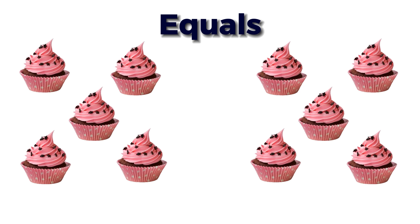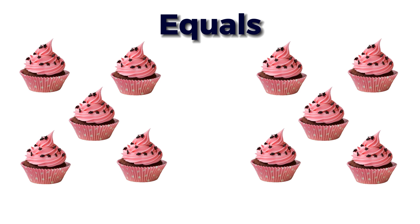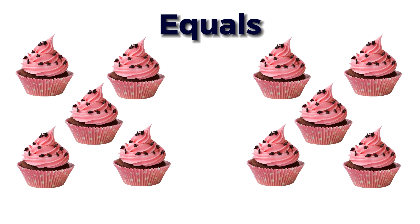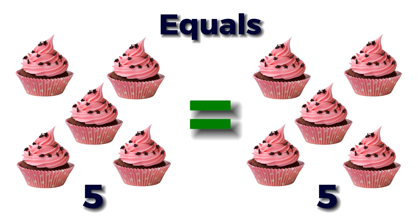Look at these cupcakes. There are five cakes on each side, so the number on one side is equal to the number on the other side. There are five on the left side and five on the right side. Both sides have the same number of cupcakes, so they are equal.